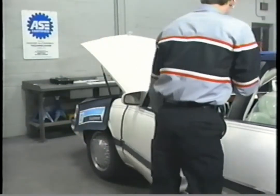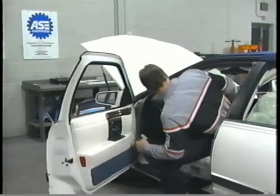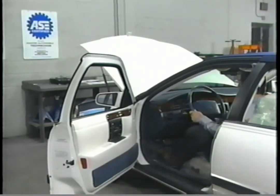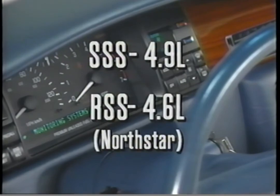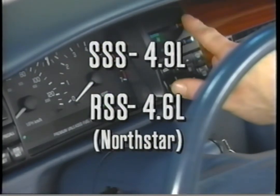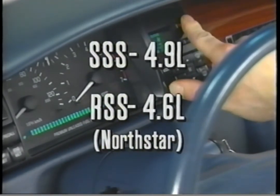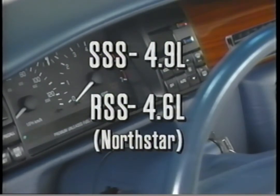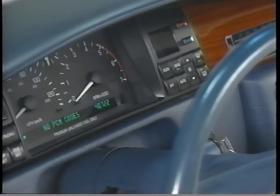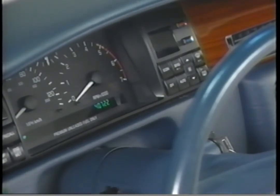Road-sensing suspension on North Star models lets you display RSS trouble codes through the onboard diagnostic system. Computer Command Ride and speed-sensitive suspension don't go through the onboard diagnostic system at all, so it's important to know which system you're working with. 1993 Eldorados and Sevilles could have either one depending on powertrain. The cluster must be correctly programmed for speed-sensitive suspension with the 4.9-liter powertrain, or for road-sensing suspension with the 4.6-liter North Star. If programmed incorrectly, the electronic suspension system won't work and neither will its diagnostic functions.